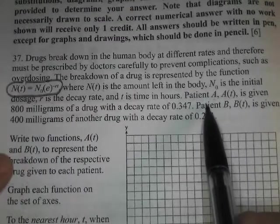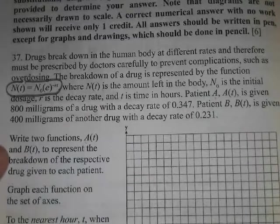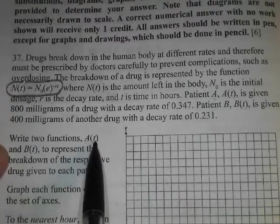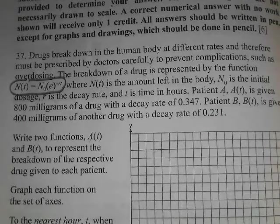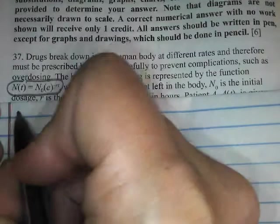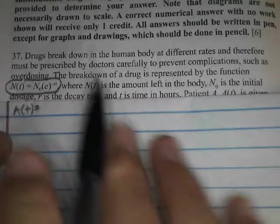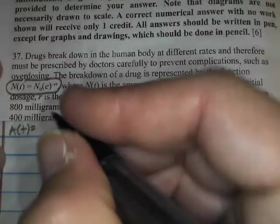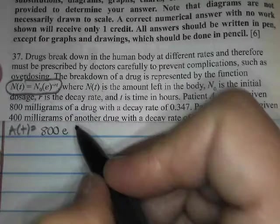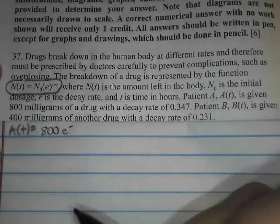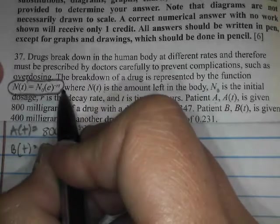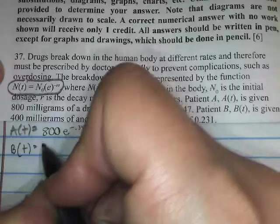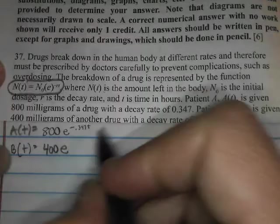So they tell you the information for patient A and for patient B and they ask you to write two functions. So our patient A function is going to be A of T. So rather than N of T, we're going to do A of T. So A of T equals, what was the initial dose for patient A? 800. E is not a variable, right? It's a number. To the negative, what was the decay rate? What was our R value for patient A? 0.347 T. And then for patient B, following the same, we started with a dose of 400. And our decay rate was 0.231. So the negative is a part of the function. R is 0.231 T. So that was good for a point. Just writing those in there. Just kind of filling them in.